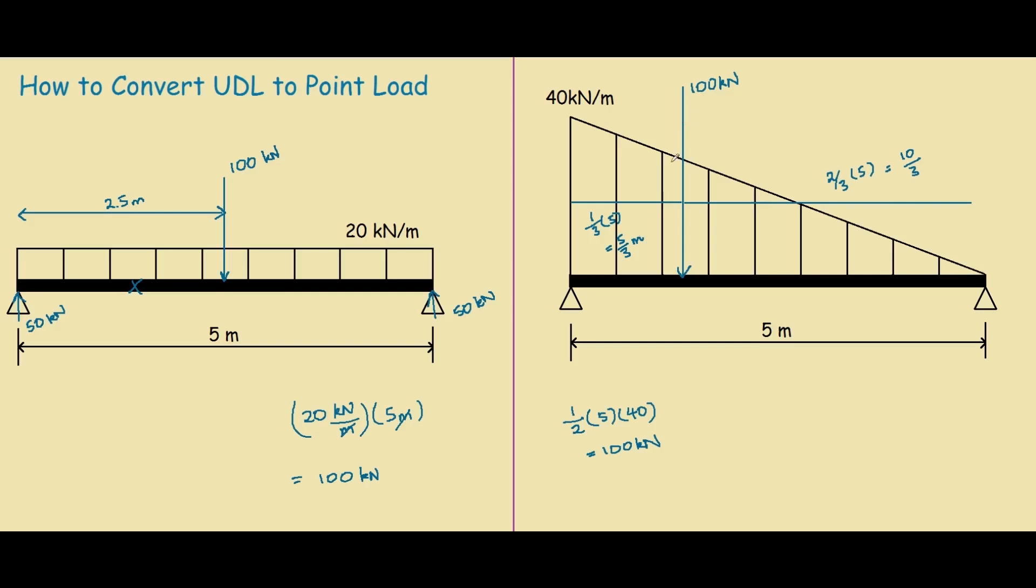So now that we've found this point load, we can actually find the support reactions much easier. Let's call this support reaction A and this one B. Now this time we have to use moments because it's not so evident. So let's call the moment at support A counterclockwise as positive.